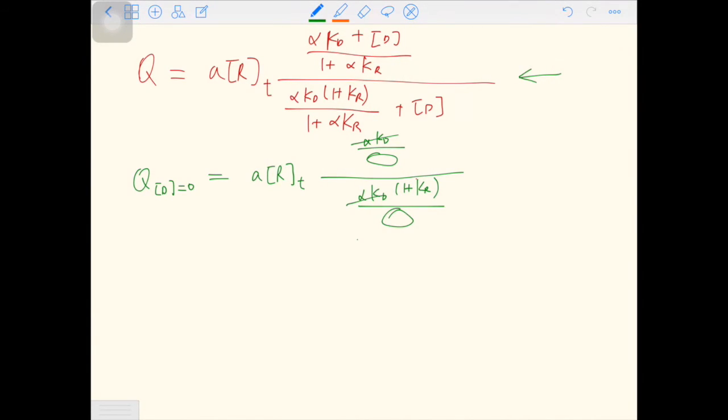And you can cancel out this. So what you have is a times RT over 1 plus KR. And now you can see the constitutive activity is determined by KR, because a times RT is a constant in this system. The bigger the KR, the smaller the constitutive activity.